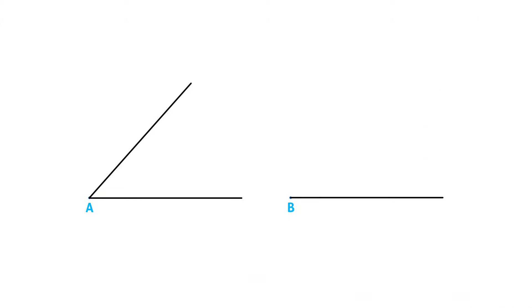We can then place our compass on point A and adjust it to any measurement and draw two arcs that will section both of our sides. Label these intersections as 1 and 2.